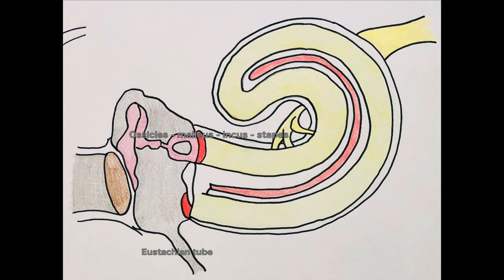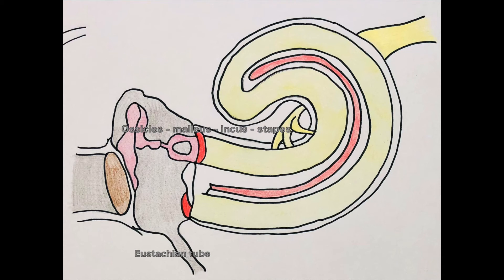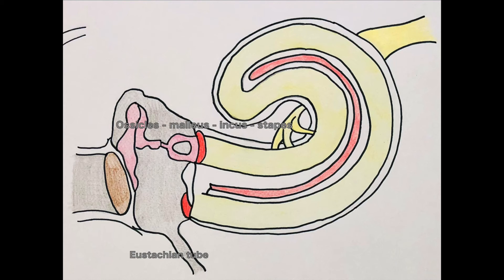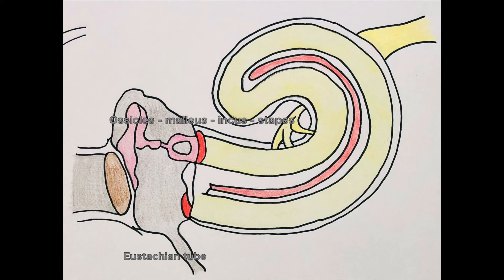Now I'm coming to the middle ear, or auris media. It lies between the tympanic membrane and the lateral wall of the inner ear, and is surrounded by the temporal bone. It transmits vibrations from the tympanic membrane via the three ossicles: the malleus, the incus, and the stapes. The tympanic cavity is filled with air. There are different parts to the middle ear — first the tympanic cavity containing the three ossicles and air, and the epitympanic recess, which is a space superior to the tympanic cavity adjacent to the mastoid air cells.